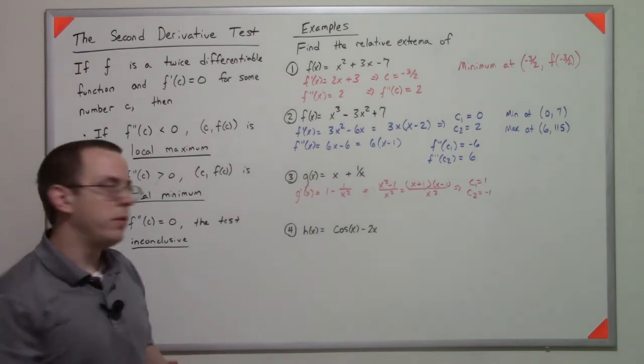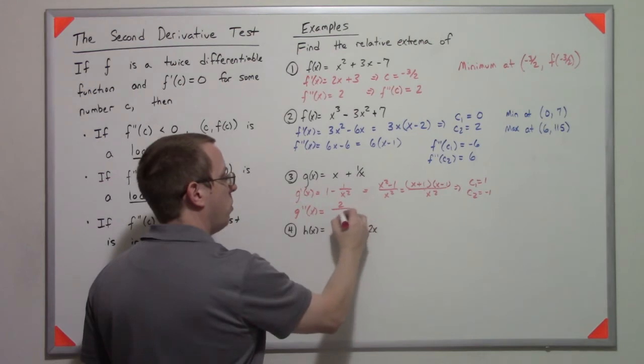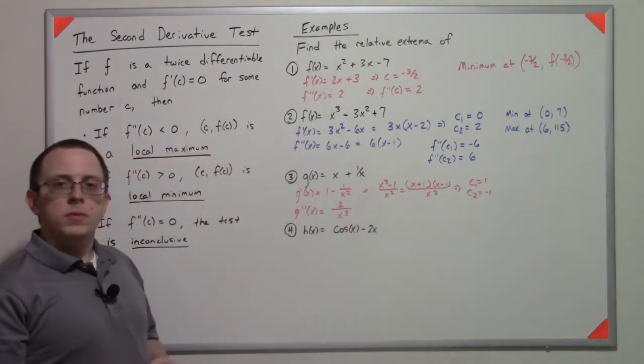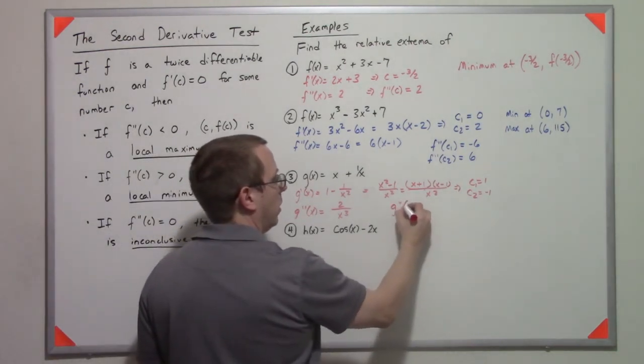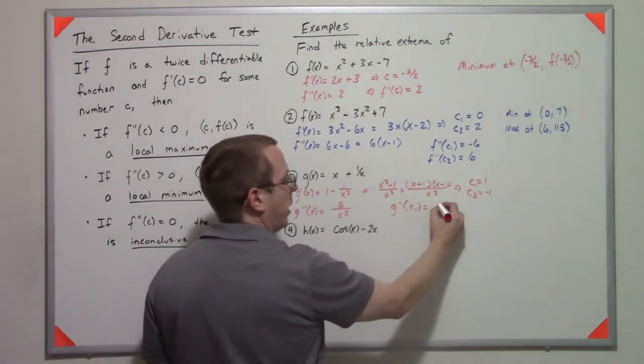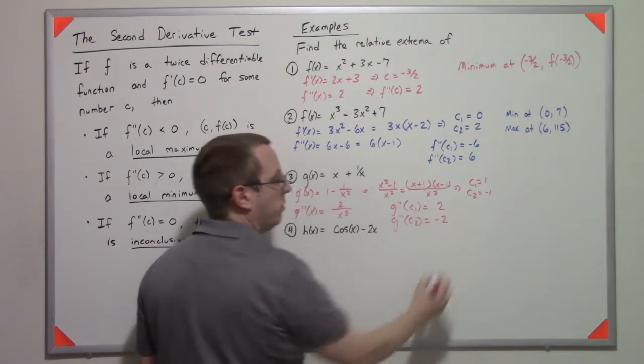So that's my first derivative. My second derivative is positive 2/x³. That means that if I plug in c₁, if I plug in positive 1, I get 2. If I plug in negative 1, I get negative 2.